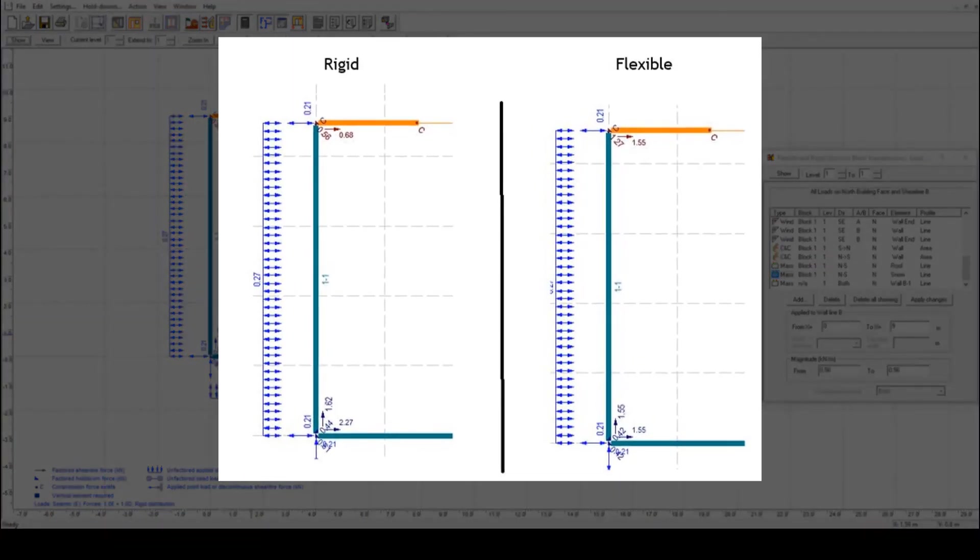In this example, if you were only to assume a rigid diaphragm distribution, you could potentially be under-designing the shear line at the top of the screen.